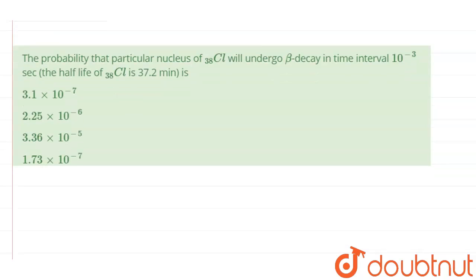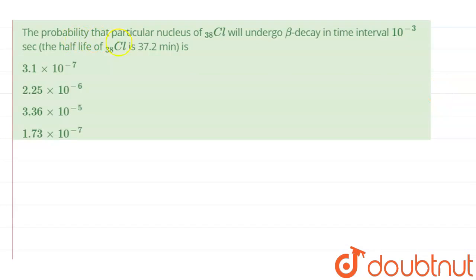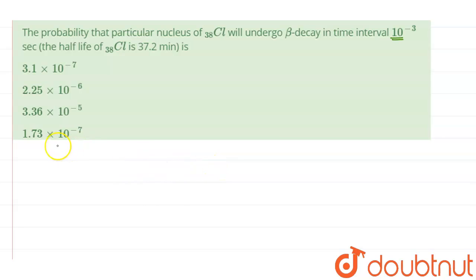The probability of a nucleus going through a particular kind of decay is constant in all time intervals throughout its decay. That means that if I am talking about an interval of 10⁻³ seconds, no matter when I take that 10⁻³ seconds, it does not matter — the probability will remain the same.